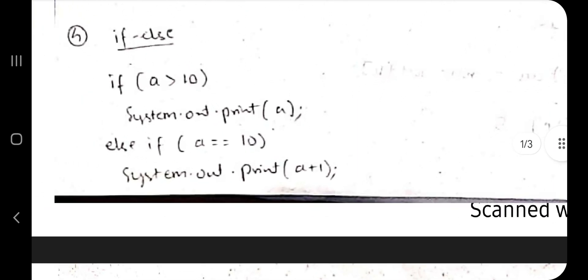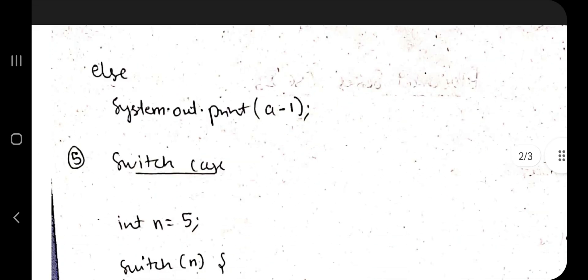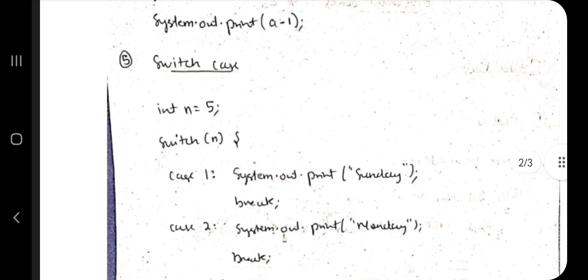For the if-else condition, here the condition is checked. Suppose that a equals 5. If a is greater than 10, then this will be executed. Else if this is not true, then only it will come to this part and it will check if a equals 10 and it will print this one. Else it will print this one. That was about the if-else condition.